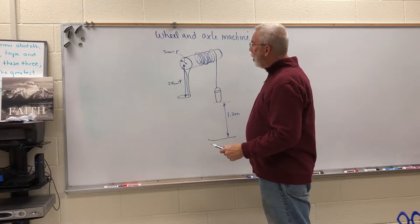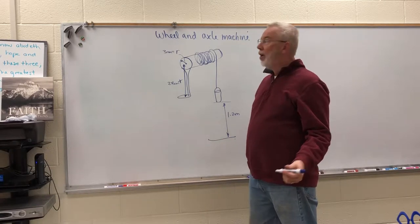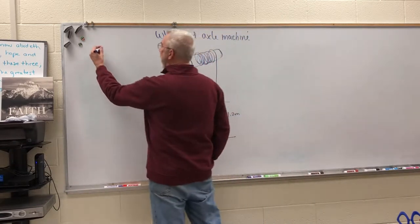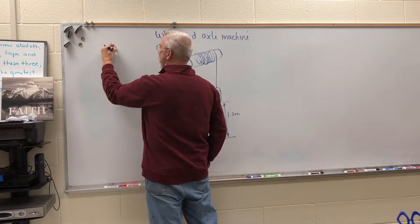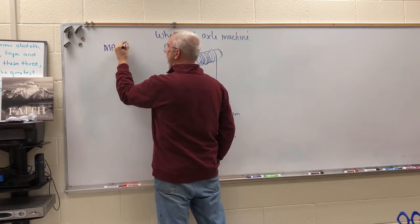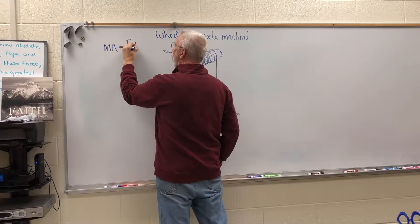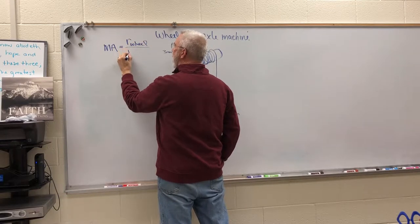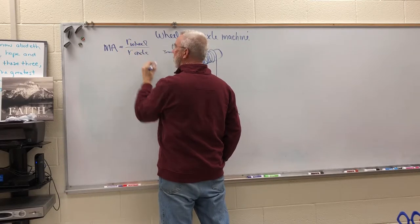Now there's a special mechanical advantage which we list as MA and that is the radius of the wheel divided by the radius of the axle. And if we solve for that, that will show us the mechanical advantage or how many times easier it is to pull this bucket up.